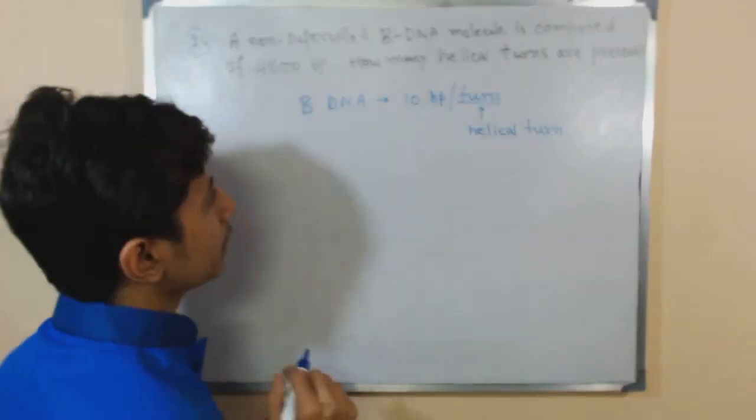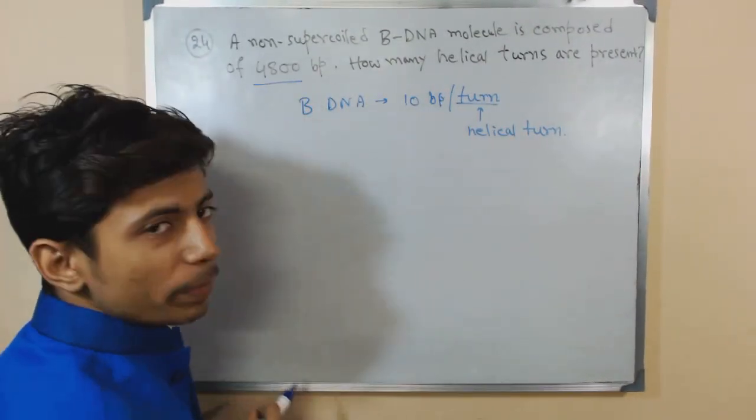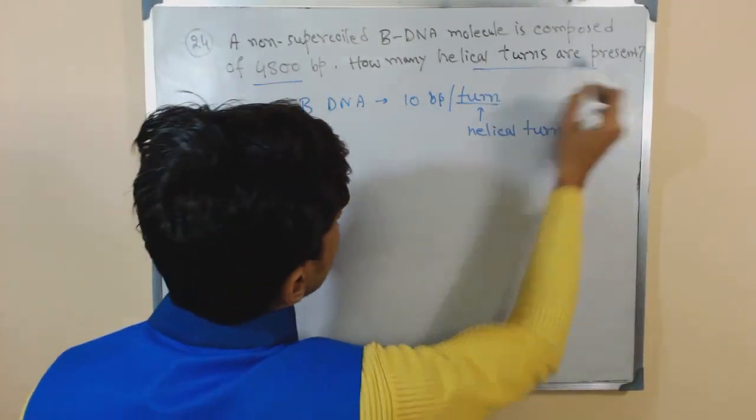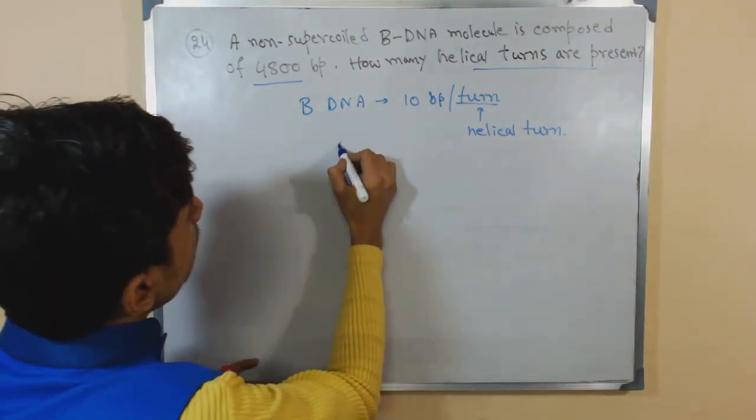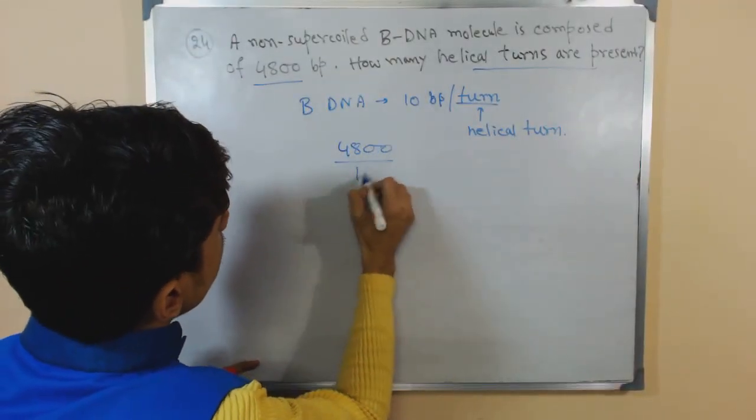So that means 10 base pairs are present per turn, and now we know the total number of base pairs are 4800. So how many helical turns are present? Easy to calculate: 4800 divided by 10.